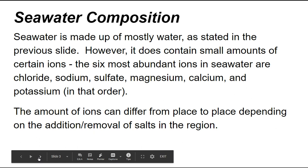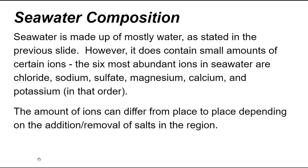Seawater composition. Seawater is made up of mostly water, as stated in the previous slide. However, it does contain small amounts of certain ions. The six most abundant ions in seawater are chloride, sodium, sulfate, magnesium, calcium, and potassium, in that order. The amount of ions can differ from place to place depending on the addition or removal of salts in the region.